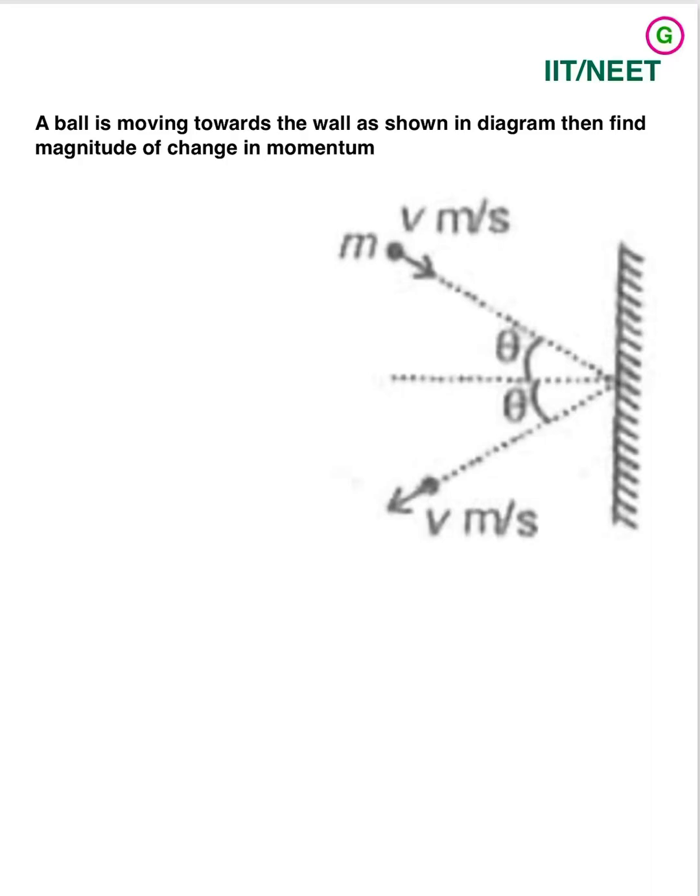Dear students, a ball is moving towards the wall shown in figure and find the magnitude of change in momentum. So in this, m is mass moving with a velocity and strikes, rebounds with v meter per second at some angle theta.